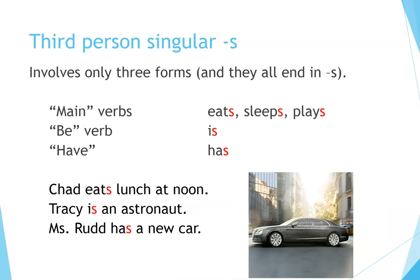Third person singular S involves only three forms, and they all end in S. Main verbs: eats, sleeps, plays. Be verb: is. Have: has. For example: Chad eats lunch at noon. Tracy is an astronaut. Ms. Rudd has a new car.